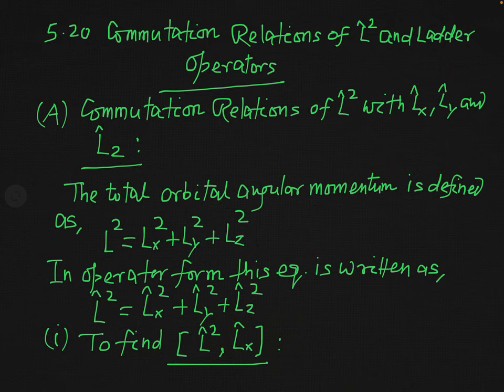The total orbital angular momentum is defined as L-squared equal to Lx-squared plus Ly-squared plus Lz-squared. When we write this equation in operator form, we simply put the operators corresponding to these measurable quantities. So this will be L-hat-squared equal to Lx-hat-squared plus Ly-hat-squared plus Lz-hat-squared.